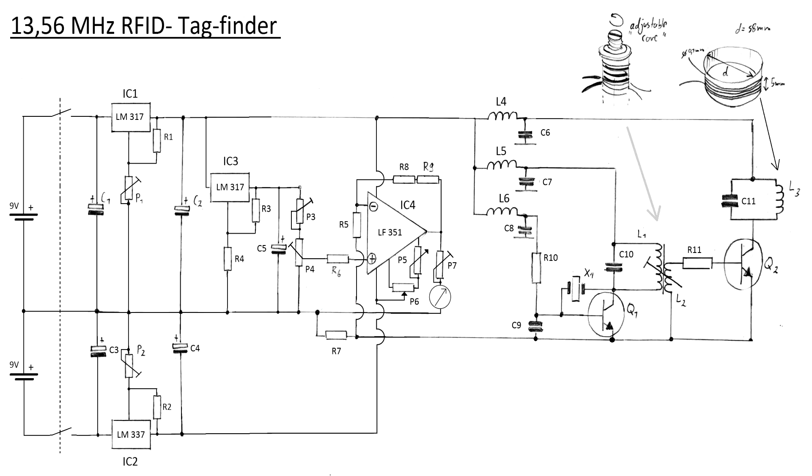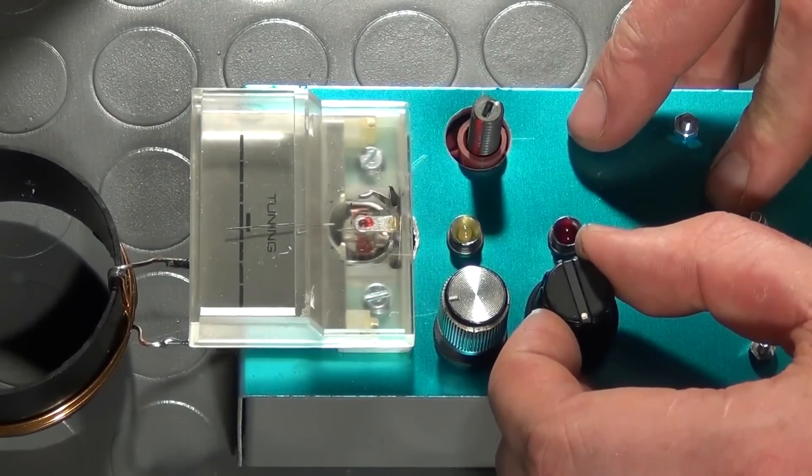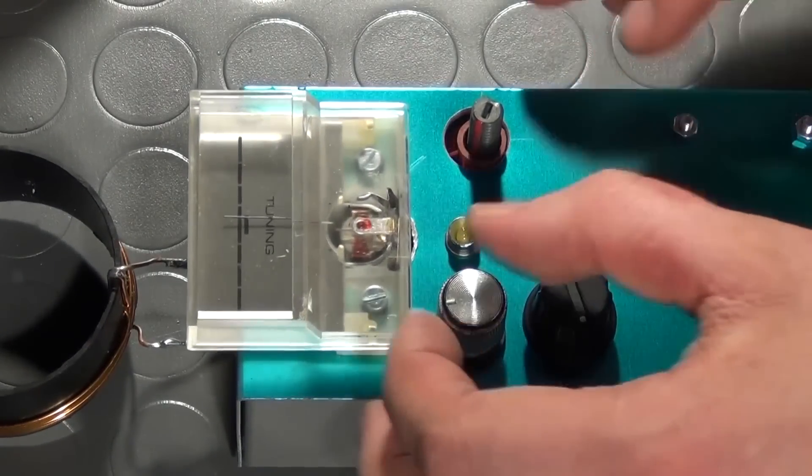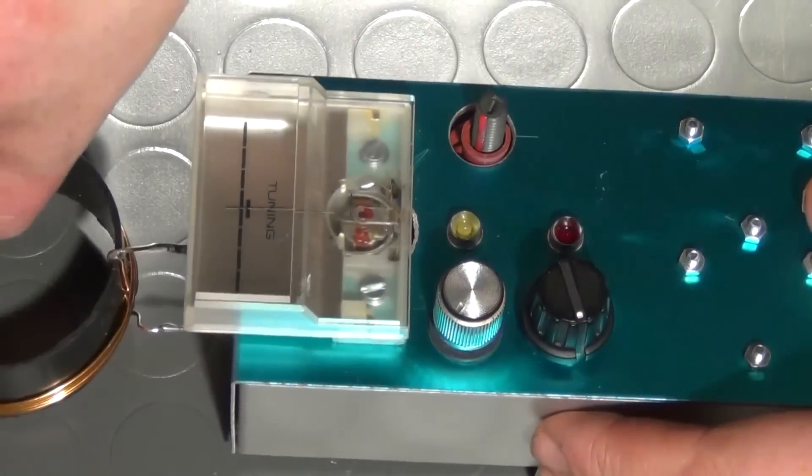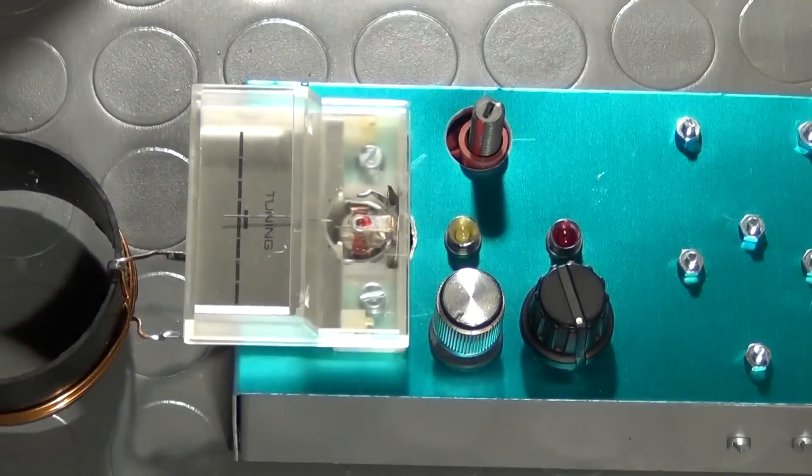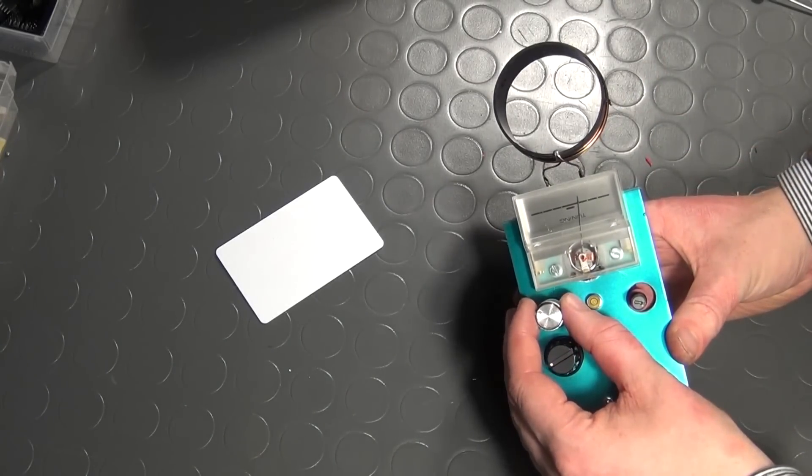With that being done, it is time to null the meter by adjusting the potentiometers P5 and P6. This must be done new every time that the RFID tag detector is switched on. That's why P5 and P6 are mounted on the front panel rather than being installed inside the housing. When nulling the detector, no RFID tag, metal object, or body part is to be brought near the detector coil.